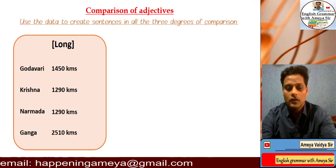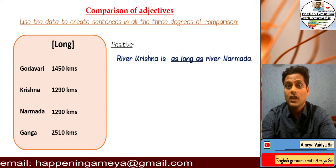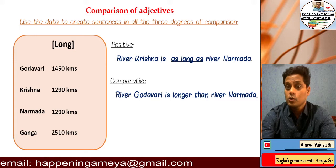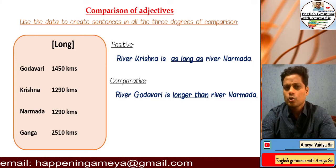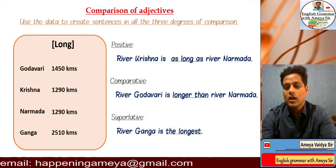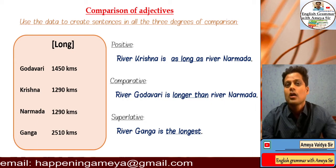Using the information, the positive degree will be: river Krishna is as long as river Narmada because they are both 1290 kilometers long. The comparative degree will be: river Godavari is longer than river Narmada because Godavari is about 1450 kilometers long. However, the superlative is: river Ganga is the longest because Ganga is 2510 kilometers long.